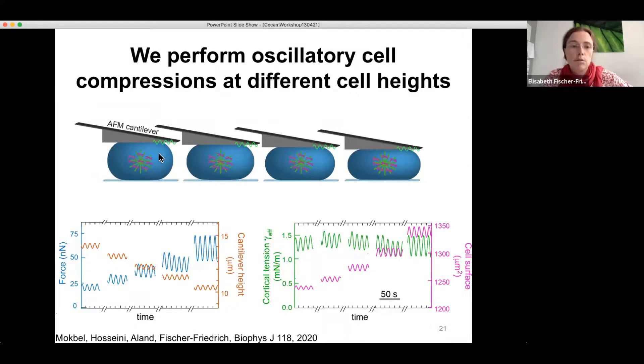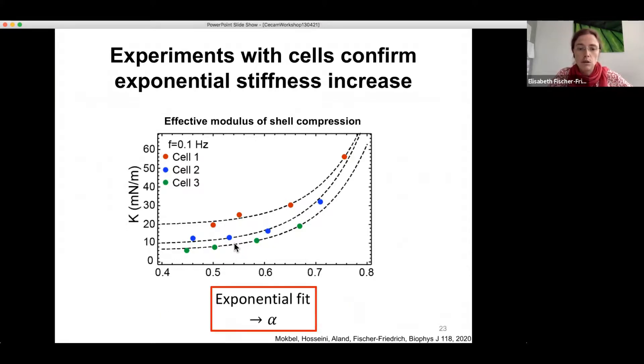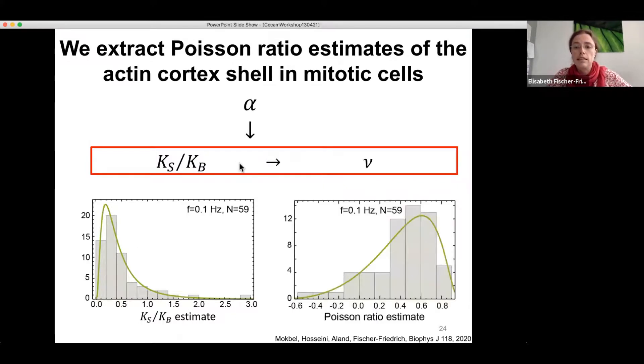Okay, so we did corresponding experiments. So experiments corresponding to the simulations, that means we disturb the cell at large reference heights and also at low reference heights, and then also at the spectrum in between. And we determined this effective cortical shell modulus independence of cell height. And we fitted the respective curves with the exponential function that I just showed you. And this way we could obtain the amplitude alpha for each cell measured. And this alpha then allowed us to obtain this ratio ks over kb for a particular cell and in correspondence the Poisson ratio of the cell.